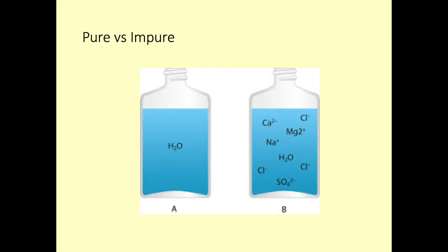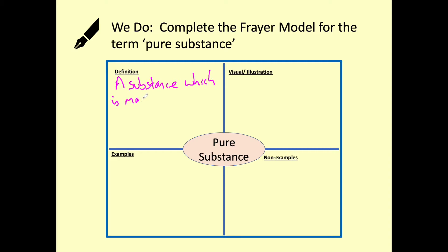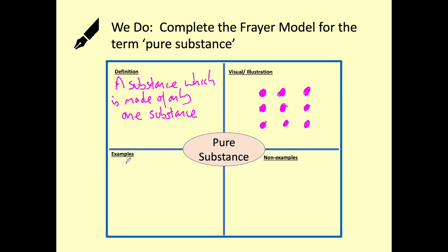We are going to complete a Freya model for the term pure substance. On your worksheet you have an example of this. Our definition for a pure substance is a substance which is made of only one substance. For a visual illustration we can use circles of only one type — they don't have to be in a lattice, they can be randomly arranged as we have seen in those previous examples. An example of a pure substance is something which just contains H₂O, so distilled water.